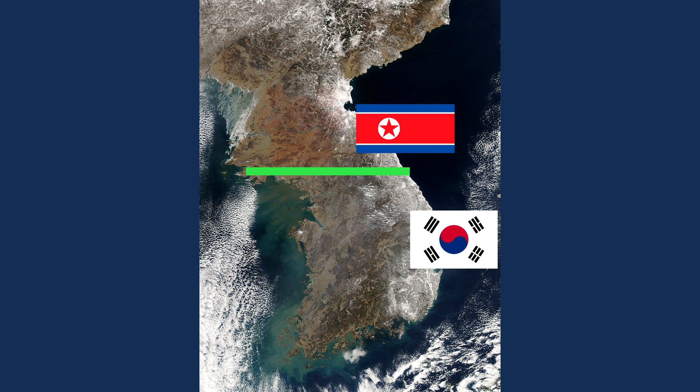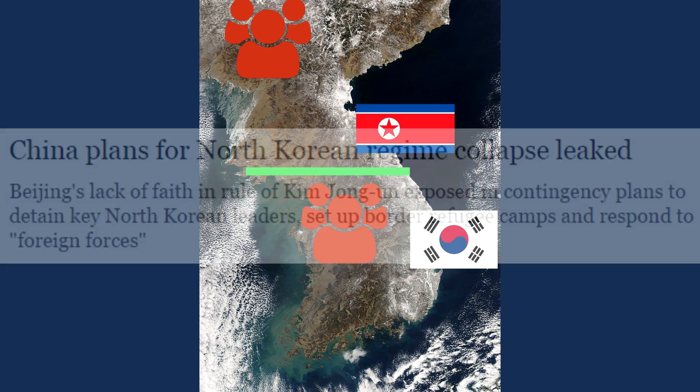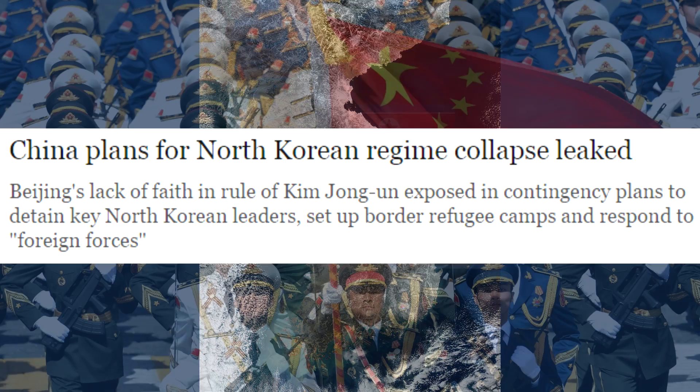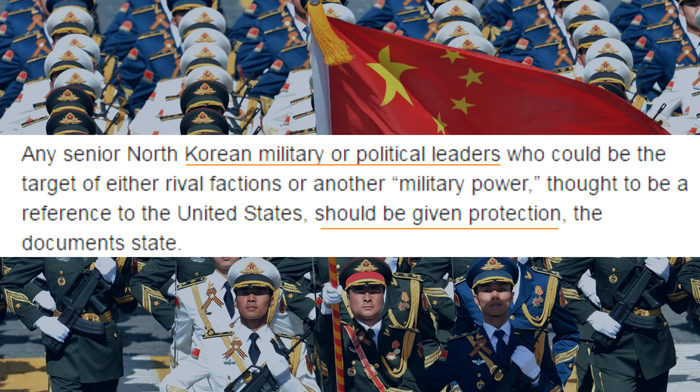In fact, in leaked documents, the Chinese already have emergency planning for this scenario, which includes gathering North Korean refugees in camps, turning back undesirables at the border, and protecting North Korean military and political leaders from what they call foreign influence.